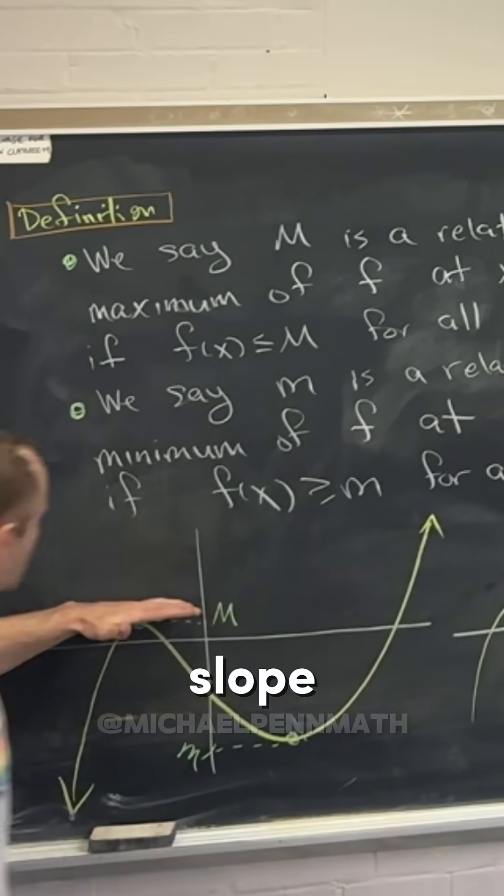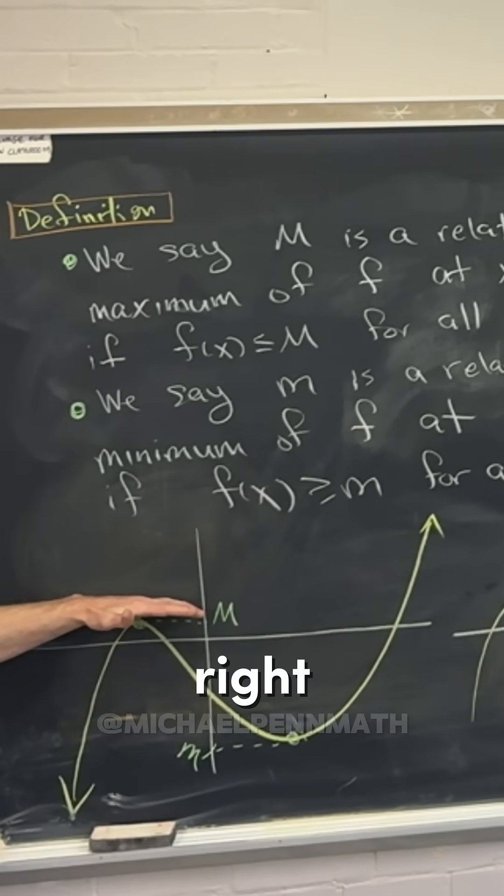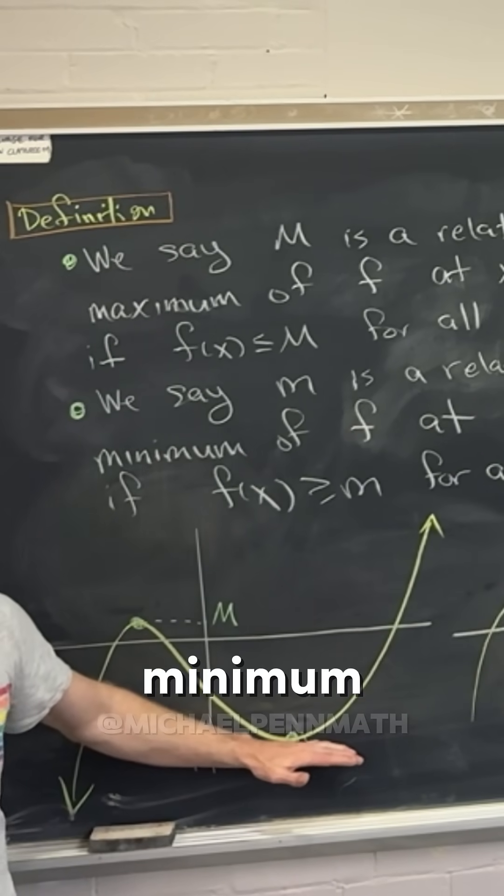And then same thing over here. Slope of the tangent at that maximum is zero, right? The slope of the tangent at that minimum is zero.